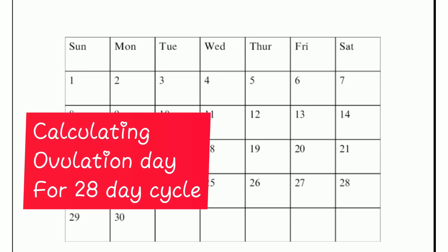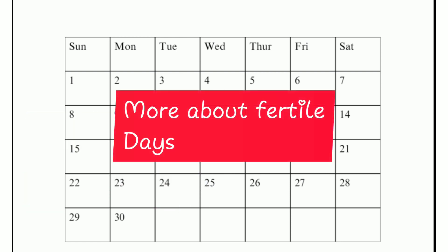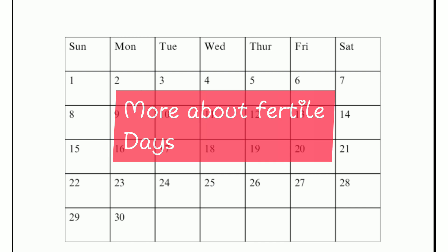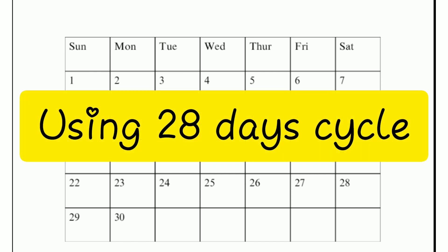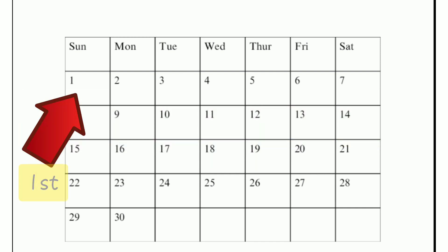How to calculate ovulation day if the length of your cycle is 28 days, and also give you more light on the fertile days in relation to ovulation. I'll be using an example 28-day cycle. The first day you bleed in your menstrual cycle is the first day of your menstrual period.